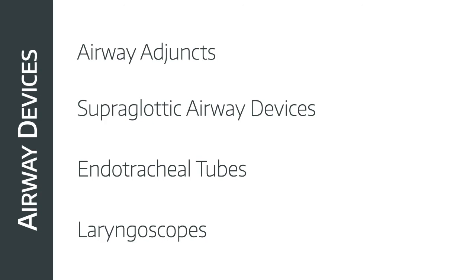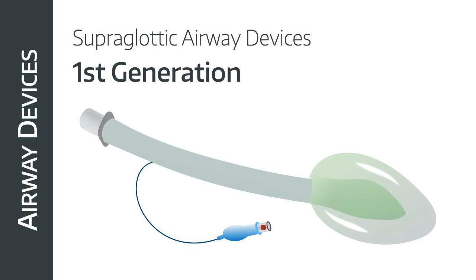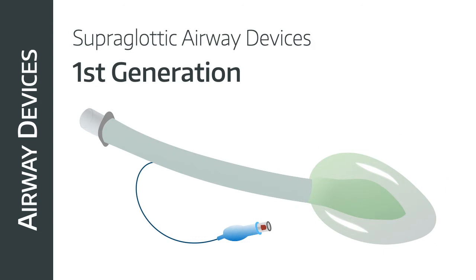Now we come on to supraglottic devices — these have revolutionized anaesthesia over the last few decades. As the name suggests, the fact that they remain above the level of the cords means there's no need to instrument the airway, and usually patients can remain unparalyzed, meaning faster theatre turnover. There are two generations. An example of a first generation device is the classical laryngeal mask airway, inserted blindly through the mouth into the hypopharynx. The mask is inflated to create a seal against the laryngeal inlet. In operative settings it's indicated for cases of short duration — less than three hours — in patients who have fasted and are at low risk of aspiration.